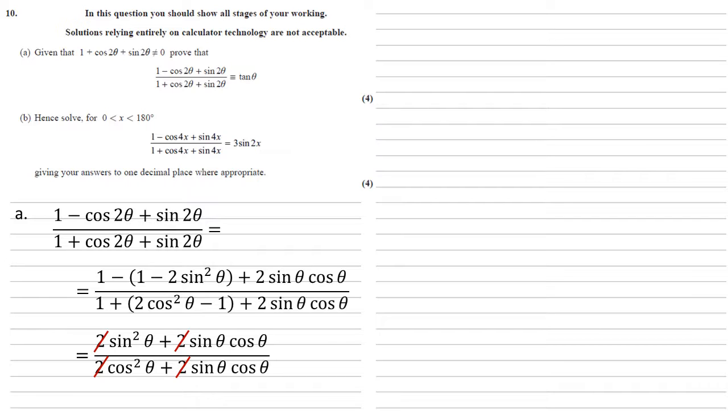We can now see that on the top we've got two terms which are multiples of sine, on the bottom we've got two terms which are multiples of cos, so let's factorise those out. We can now cancel the sine theta plus cos theta top and bottom which leaves us with sine theta over cos theta. Well this is exactly the same as tan theta, which is what we were aiming for.